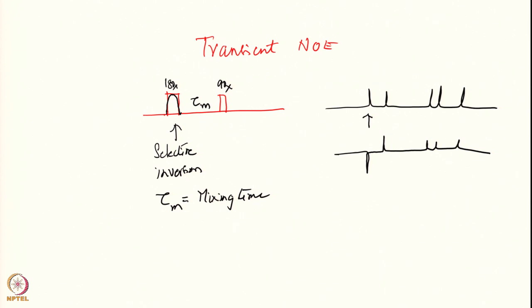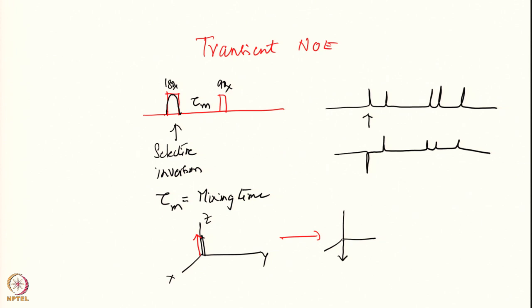Let me explain what we achieve here. Suppose I have a spectrum with several lines. I will selectively invert one line with a 180° pulse. The inverted spin's magnetization, which was pointing up, is now pointing down, so I see it as a negative signal. This is the perturbation — the system now has to recover back to equilibrium.